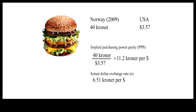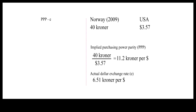So the kroner was actually more expensive in the foreign exchange market than the implied purchasing power parity, PPP. By comparing these two exchange rates, we can get a rough idea of how much the kroner was overvalued in the foreign exchange market. First, subtract the actual exchange rate, E, from the purchasing power parity, PPP. Then divide this difference by the actual exchange rate, E. Substituting actual numbers into the formula, we can see that the kroner was 72% overvalued in the foreign exchange market compared to the purchasing power parity, PPP.